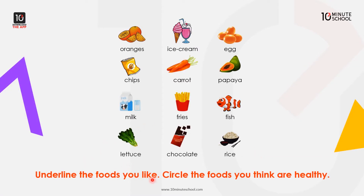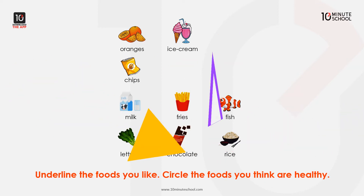Underline the foods you like. Circle the foods you think are healthy. Let's see the foods listed: carrot, papaya, milk, fries, fish, lettuce, chocolate, rice. Now let's take a look at the foods.